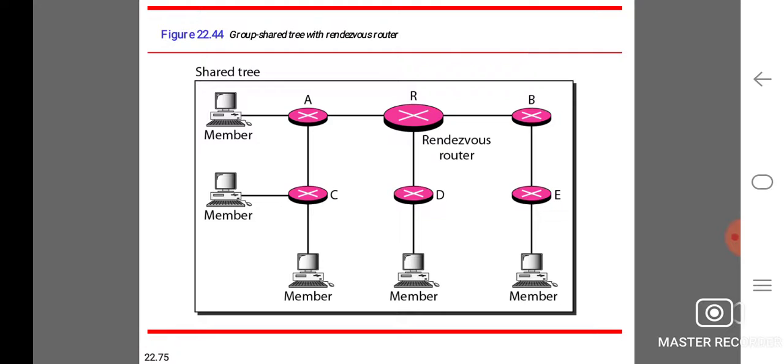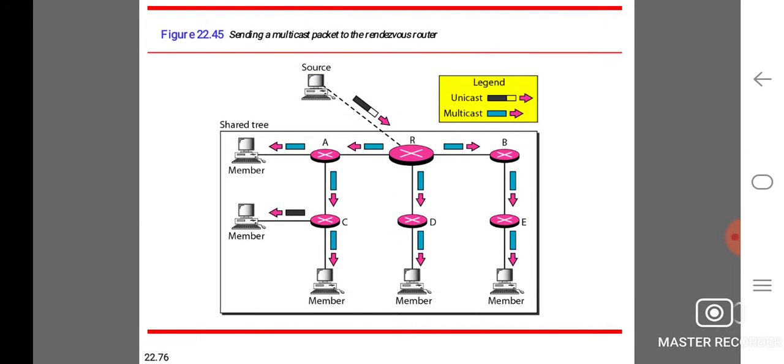Group-shared tree with rendezvous router. Shared tree A or AB uses the rendezvous router. Sending a multicast packet to the rendezvous router creates a source-shared tree.